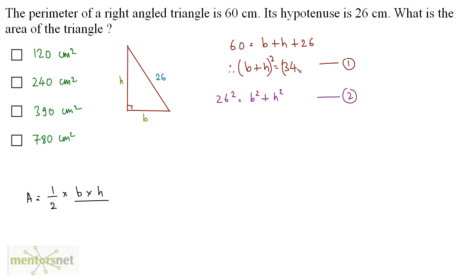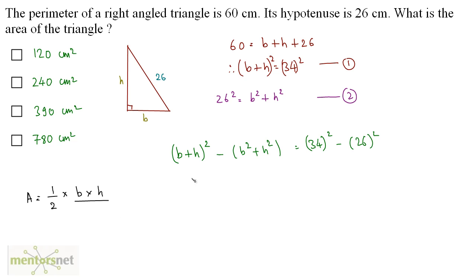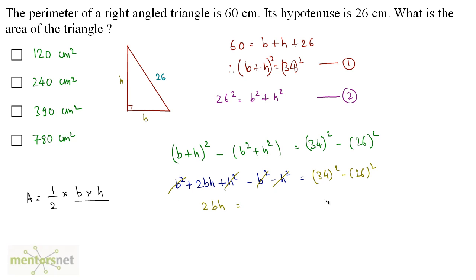The trick is to square equation 1 on both sides and subtract equation 2 from it: (b + h)² minus (b² + h²) equals 34² minus 26². Expanding: b² + 2bh + h² minus b² minus h² equals 34² minus 26². The squared terms cancel, leaving 2bh equals (34 + 26)(34 − 26), applying the difference of squares identity.